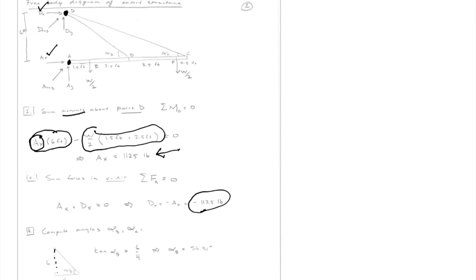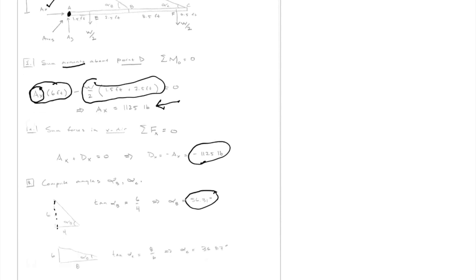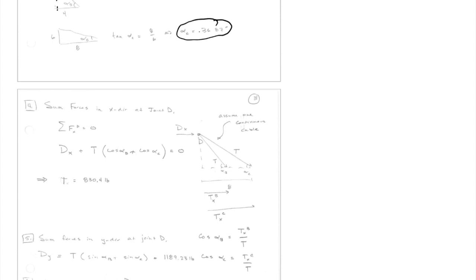These are both simple right triangles. The tangent of alpha B equals the opposite side — 6 feet — over the adjacent length, which is 4 feet (1.5 plus 2.5 feet). So alpha B is 56.31 degrees. Likewise, we can do the same for alpha C. Now we'll create a more detailed, closer-up free body diagram where we cut the cables away.